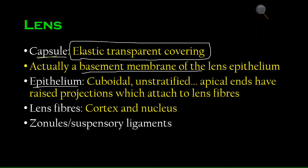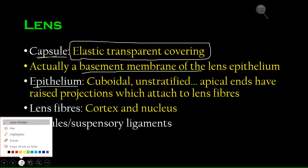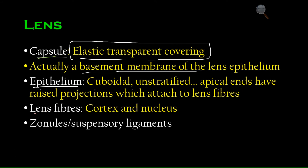To recap: the capsule is the elastic, transparent outer covering and is actually a basement membrane of the lens's epithelium. The epithelium is cuboidal and unstratified — a single layer. The apical ends face the inside of the lens and have raised projections that attach to the lens fibers. The outer zone of lens fibers is the cortex and the inner zone is the nucleus. The suspensory ligaments complete the whole picture.